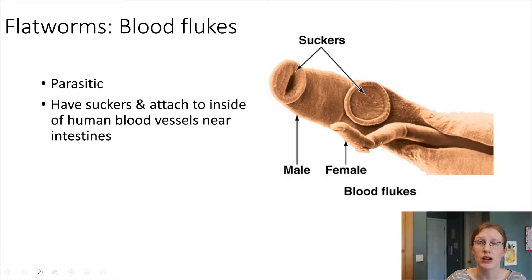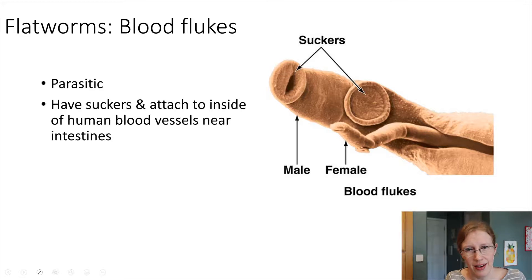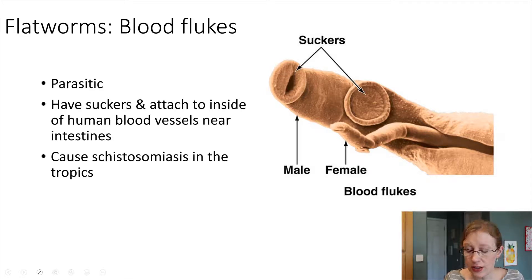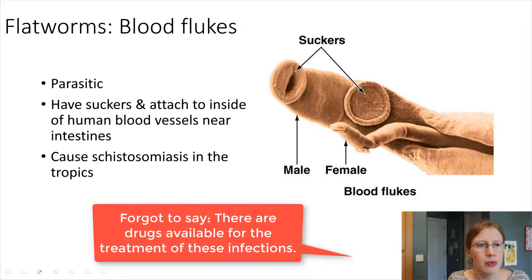They didn't even have to drink the water — the blood fluke can travel through the skin directly. We probably don't need to know all that detail, but now you know. This is the cause of schistosomiasis, which tends to happen in the tropics, and it's not a good thing.